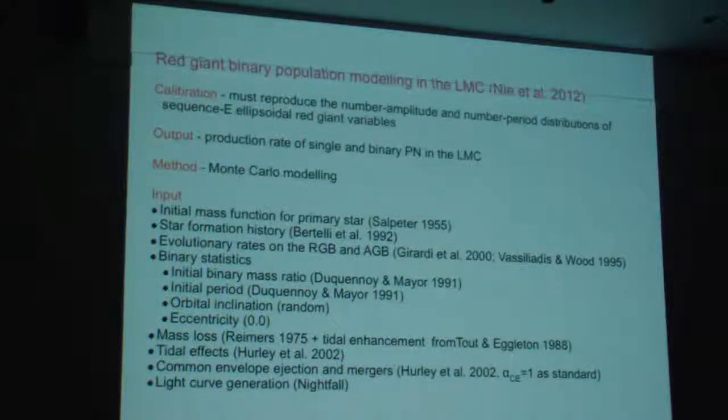So the kind of input you need is the initial mass function, star formation history of the LMC, evolution rates on the RGB and AGB, various binary statistics. Although because we're using the stars that are actually the immediate precursors, the actual nature of these initial mass ratios and initial periods are not that important. We need some type of mass loss, tidal effects for how the binaries evolve. Something about common envelope ejections and mergers, so the ratio of mergers to ejections. The mergers are pretty rare on the AGB. And then something to generate the light curves. Programs to do that exist.